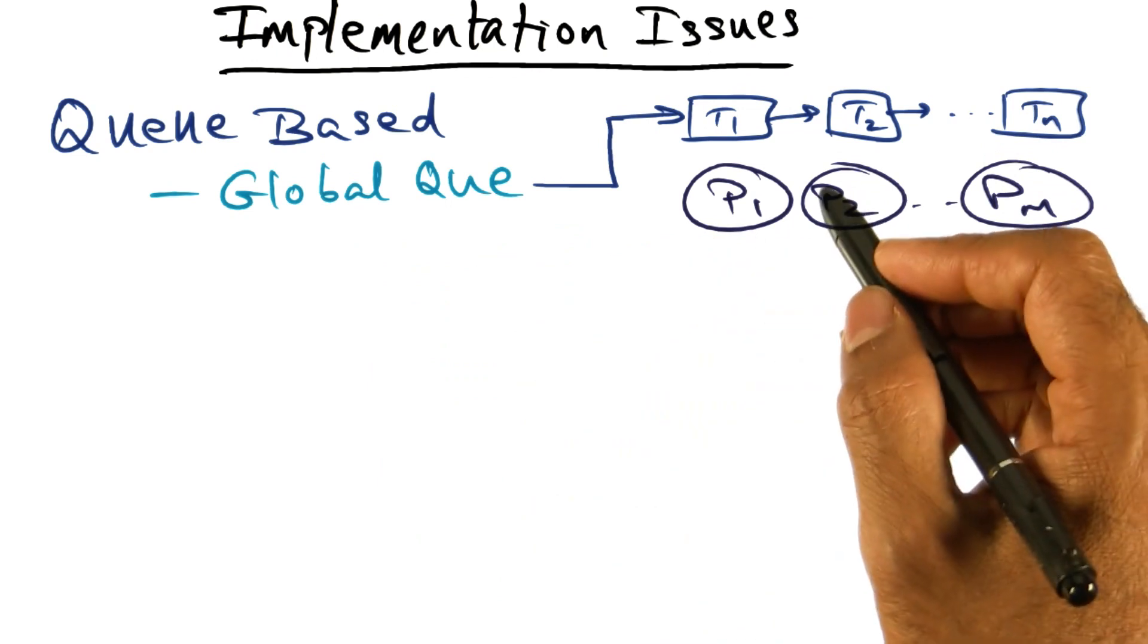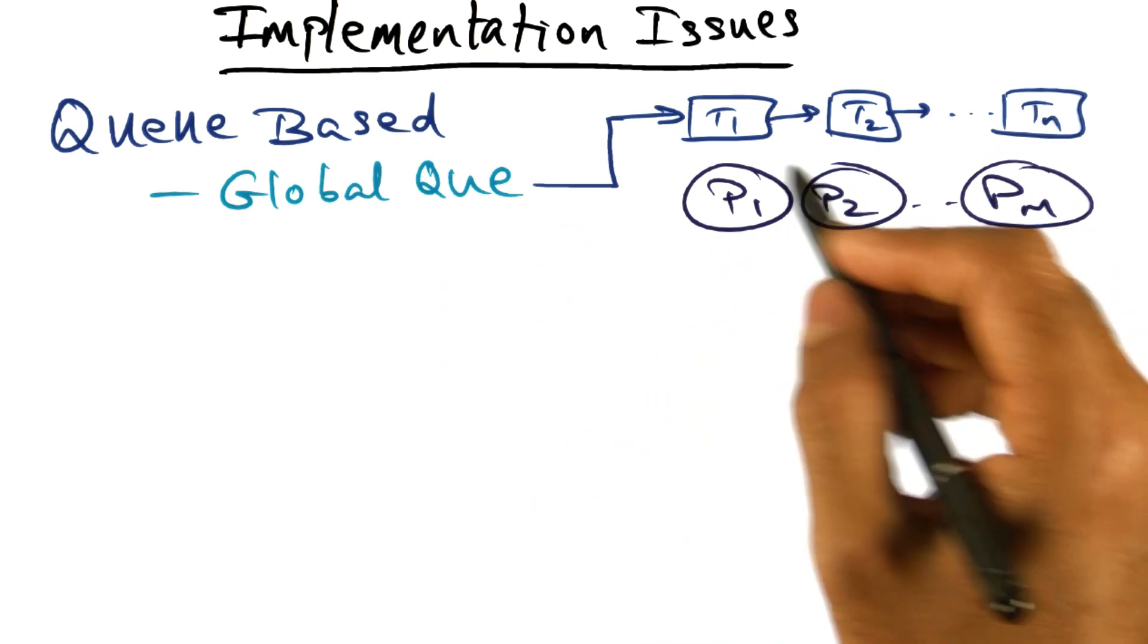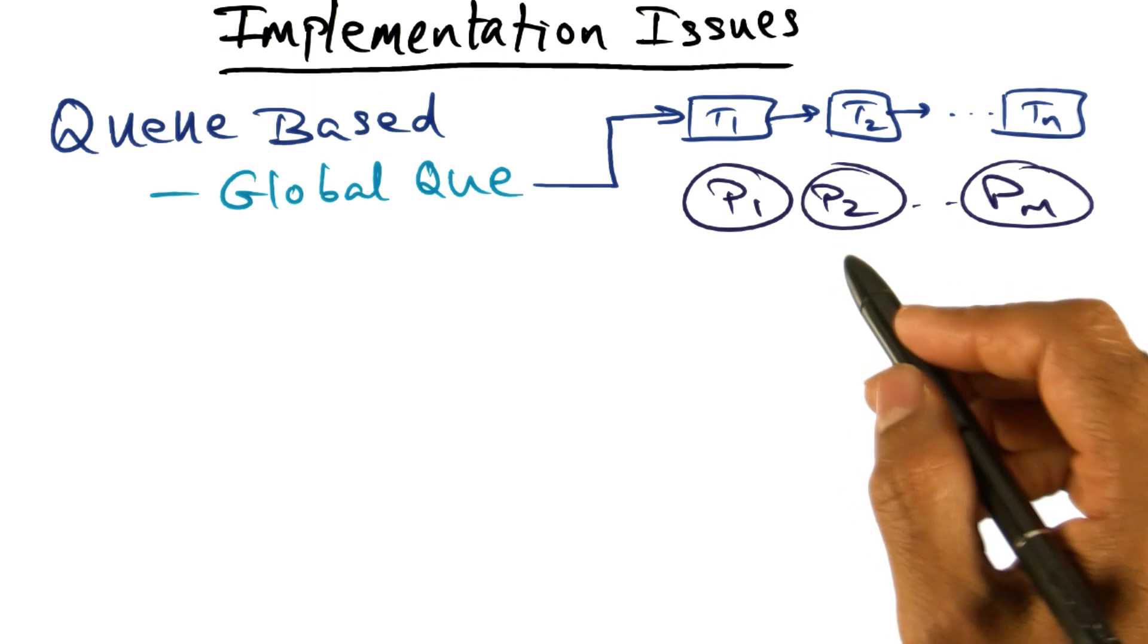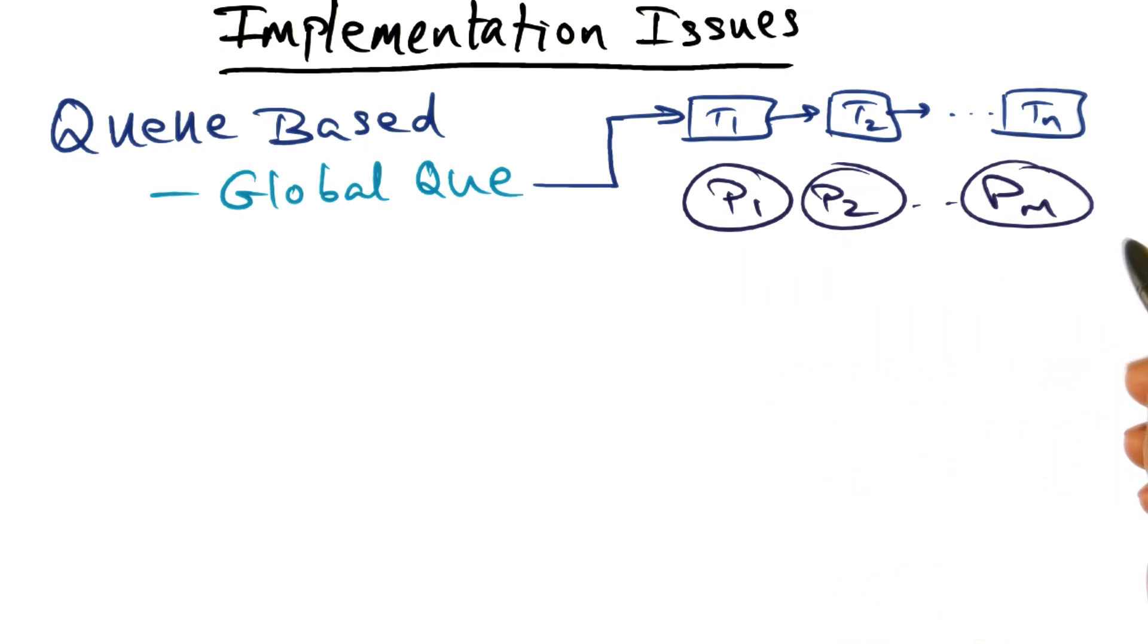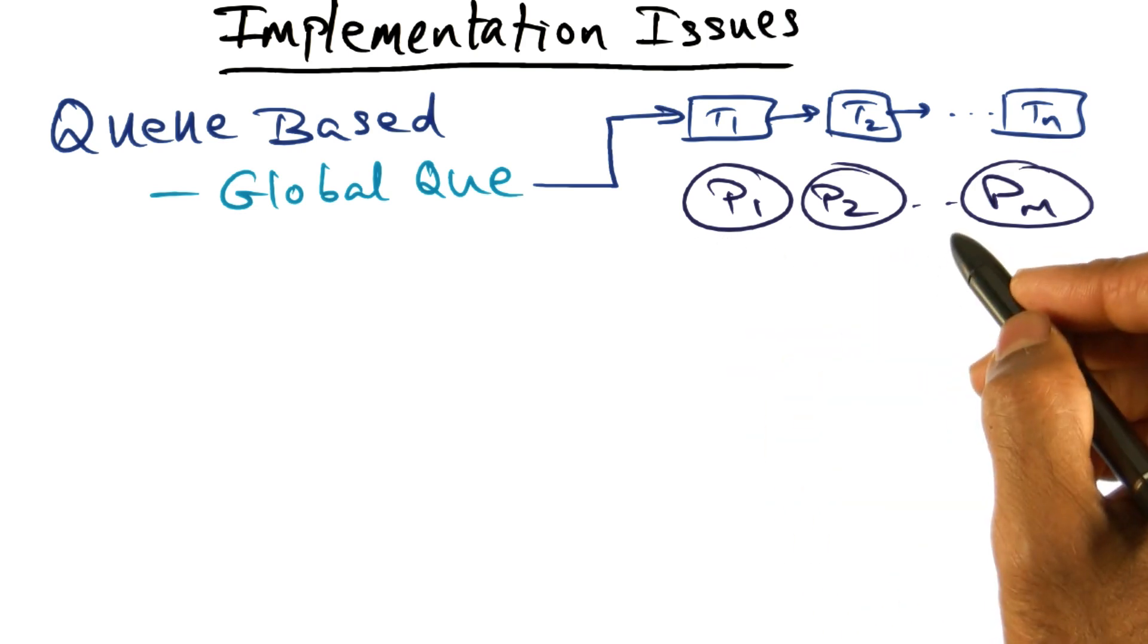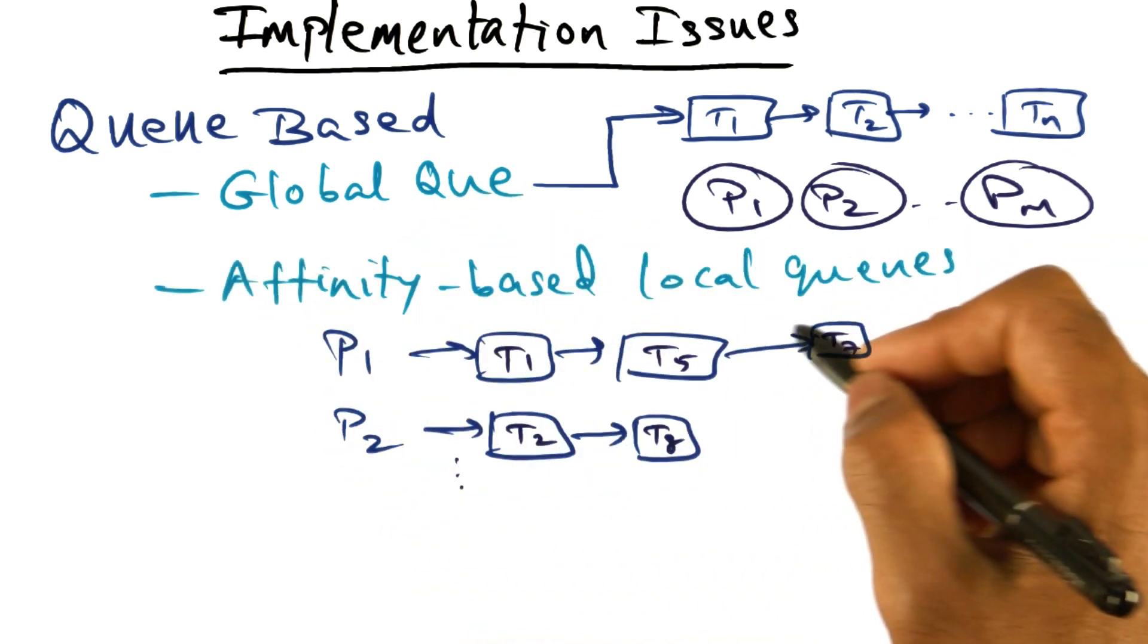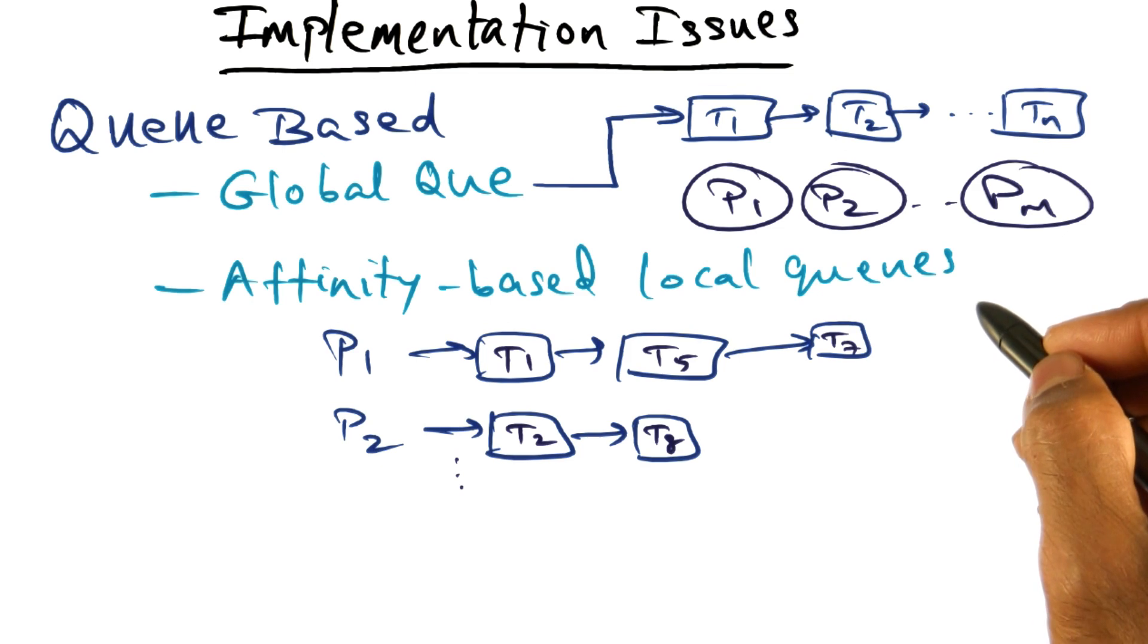This global queue becomes very infeasible as an implementation vehicle when the size of the multiprocessor is really big. Because then it's a huge data structure that all these guys have to access centrally and so on. So typically, what is done is to keep local queues with every processor.